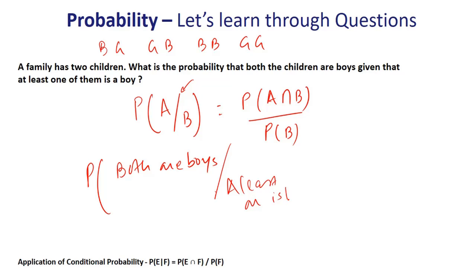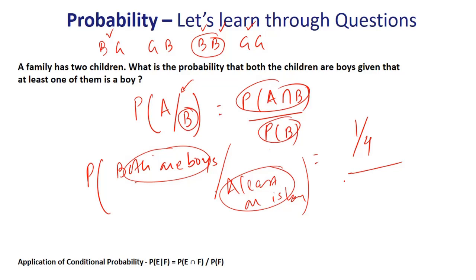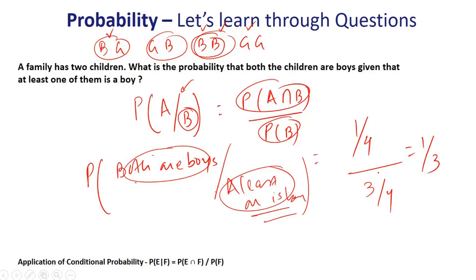At least one is a boy means the cases are boy-girl, girl-boy, and boy-boy. Both are boys is only the boy-boy case. The intersection is just one case, so the probability of this intersection is 1 out of 4. Divided by the probability of at least one being a boy, which is 3 cases out of 4 — so 3/4. Therefore the conditional probability is 1/3. Let's understand this through a few more examples.